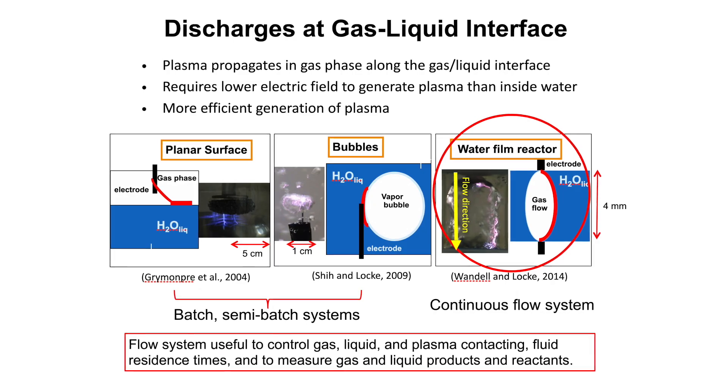It's a very small system that has a gap. Basically, the spacing between the electrodes is only four millimeters. But it's such that it produces a water film and then a gas core, and the plasma moves at the interface between the gas and the liquid.